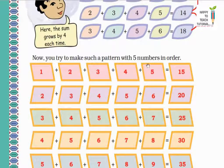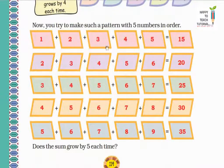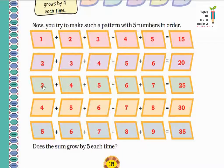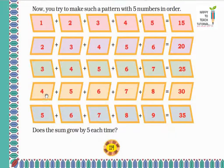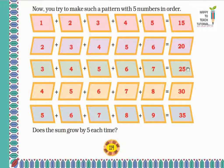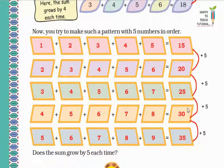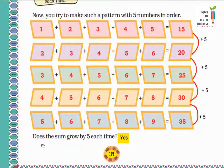Now try making a pattern with five consecutive numbers. Starting from 1: 1+2+3+4+5 equals 15. Starting from 2: 2+3+4+5+6 equals 20. Starting from 3: 3+4+5+6+7 equals 25. Starting from 4: 4+5+6+7+8 equals 30. Starting from 5: 5+6+7+8+9 equals 35. The sum grows by 5 each time: 15, 20, 25, 30, 35. So the answer is yes — when using five consecutive numbers, the sum grows by 5 each time.